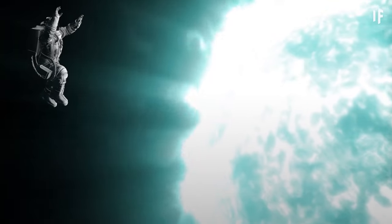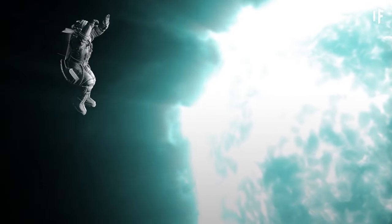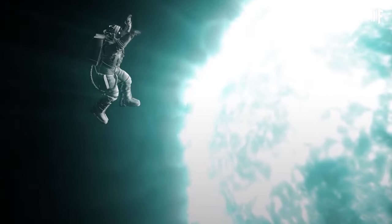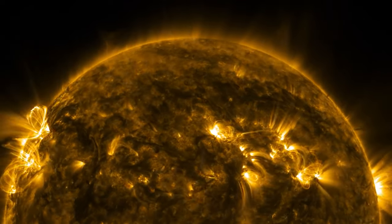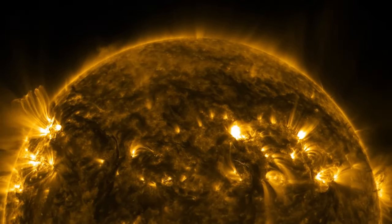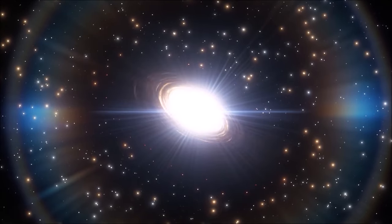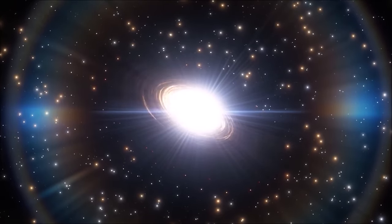The surface gravity on a neutron star is mind-bending. If you were to fall from just one meter above its surface, you'd accelerate to a mind-blowing two million meters per second by the time you hit the ground.